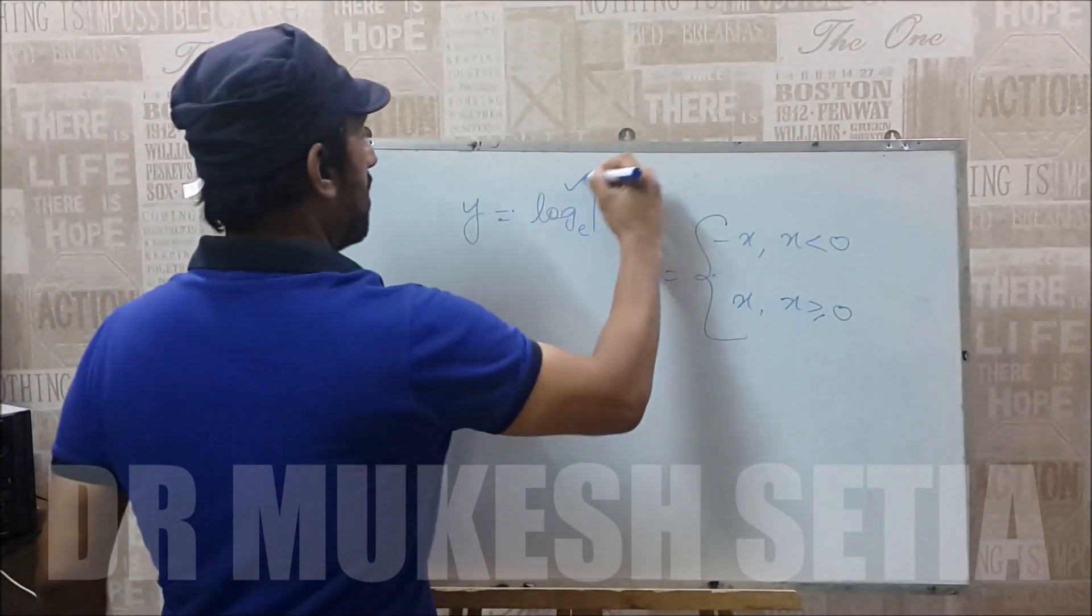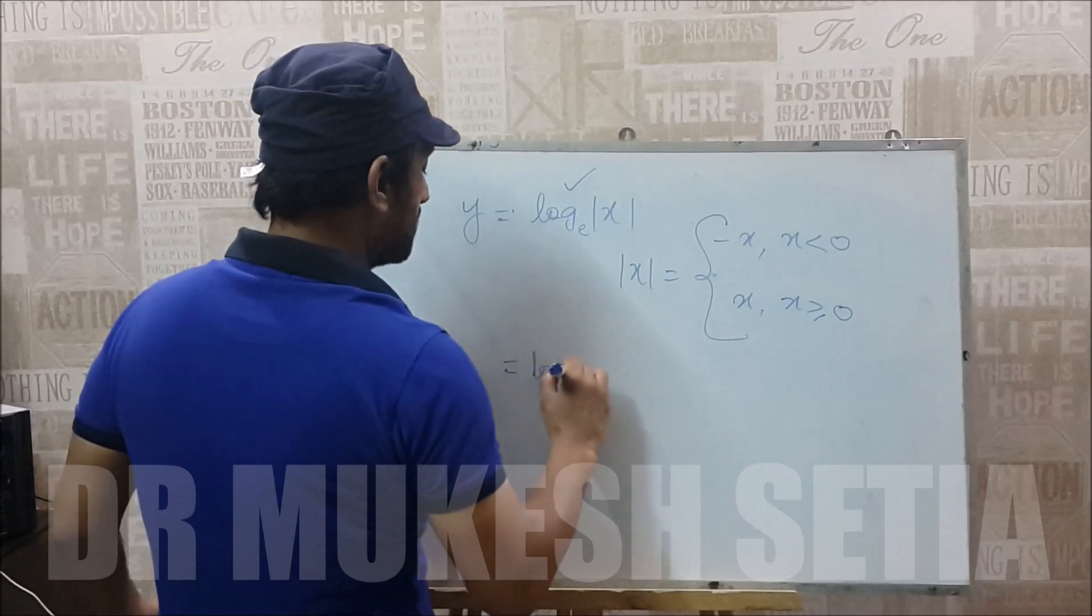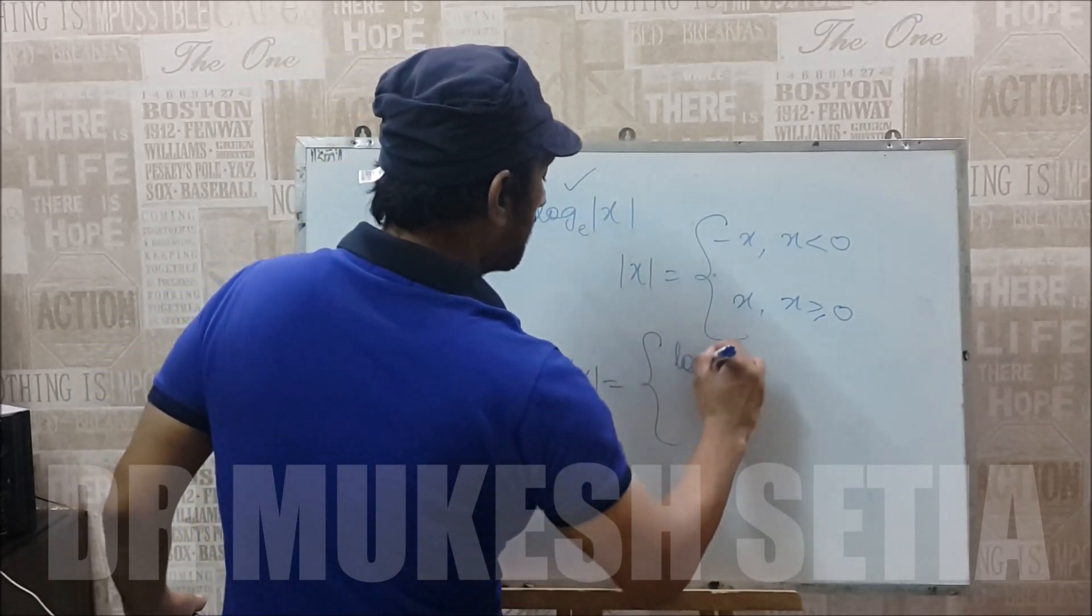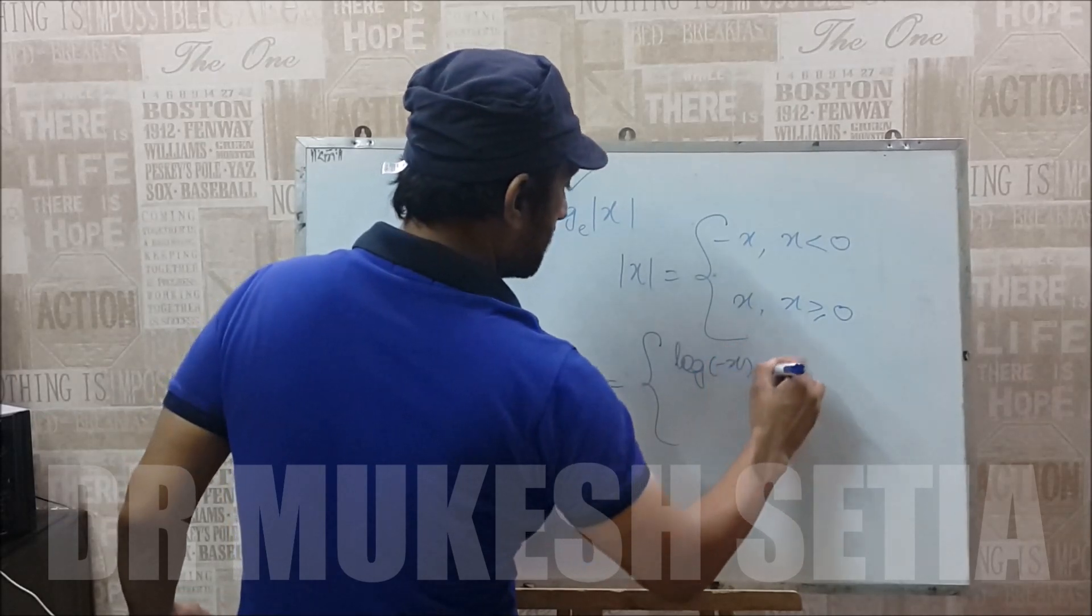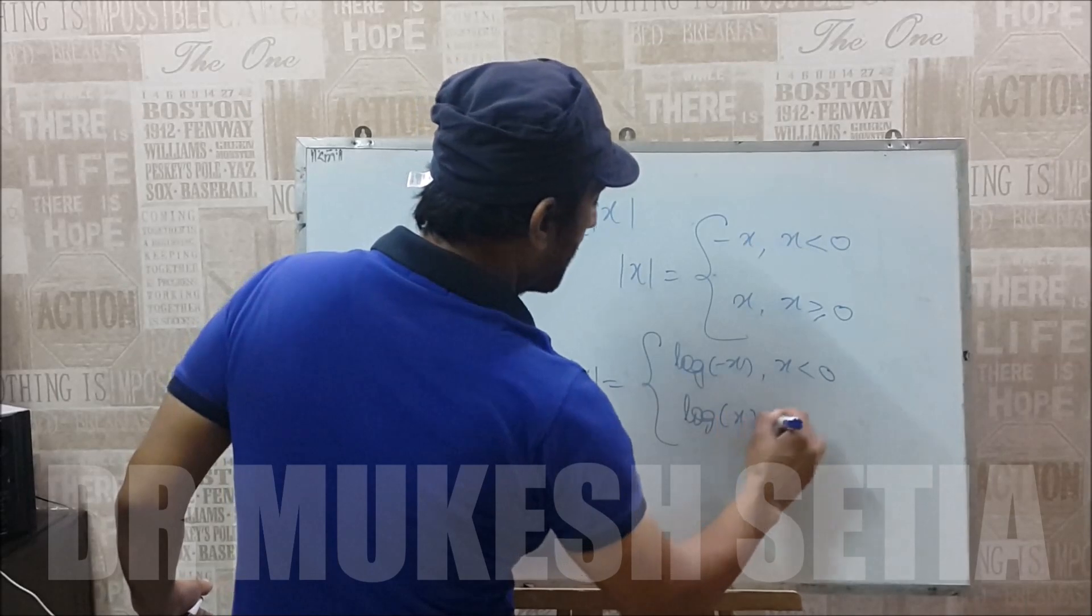But this log mod x is a composite function. So as we make branches of log mod x, you can see that this is log of minus x when x is less than 0 and this is log of x when x is greater than 0.